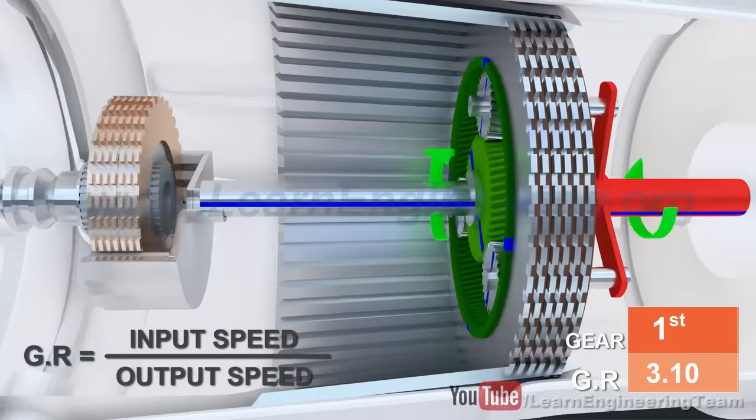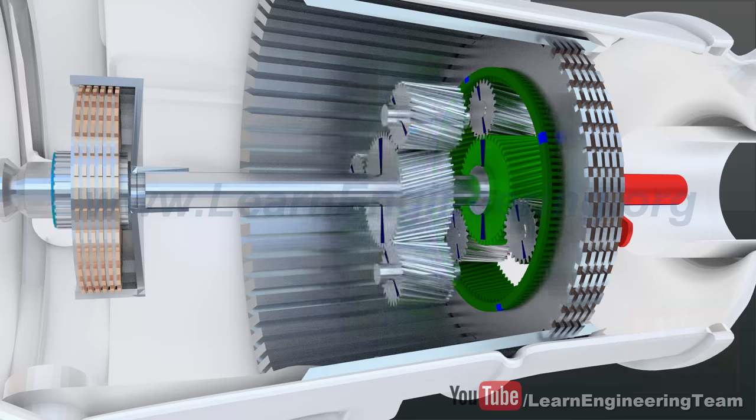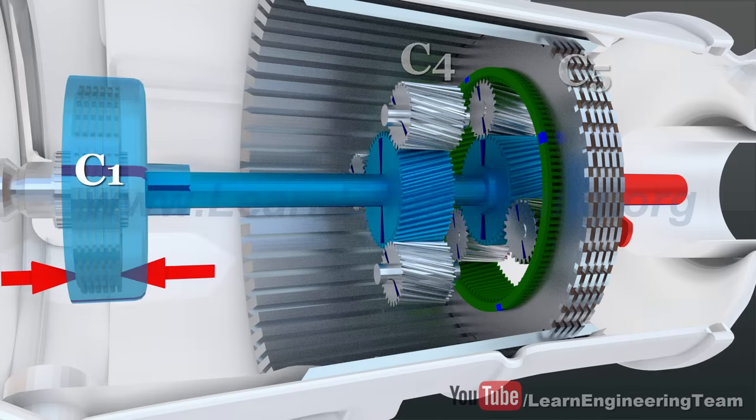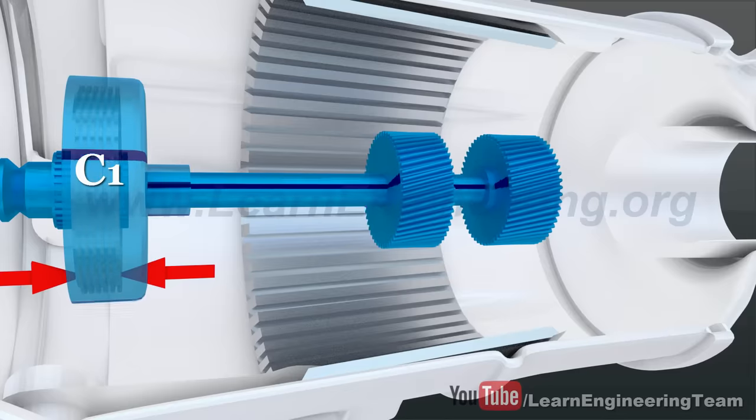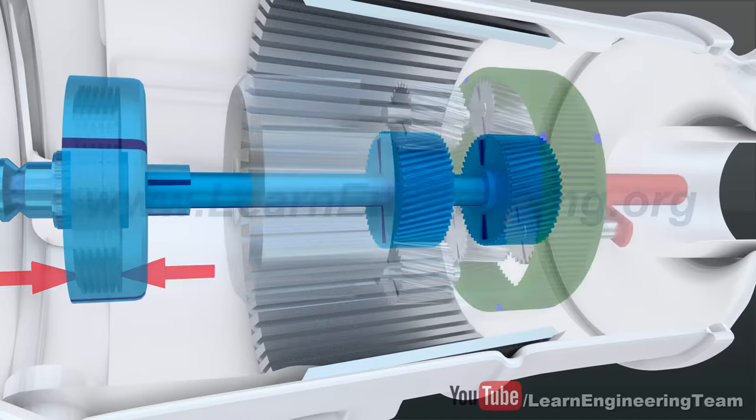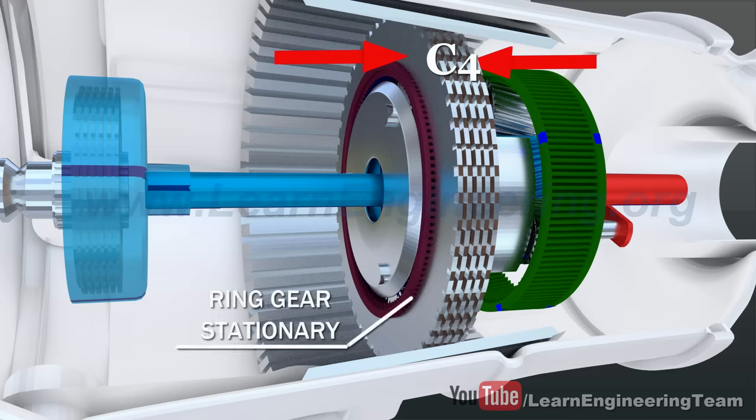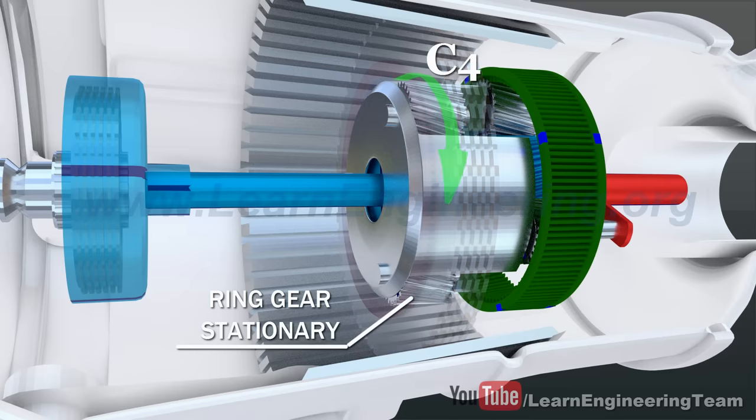To achieve additional gear ratios, add another planetary gear set. It is clear that applying C1 will always rotate both the sun gears at the input shaft speed. If we apply C4 as well, the planet carrier of the second set will turn.